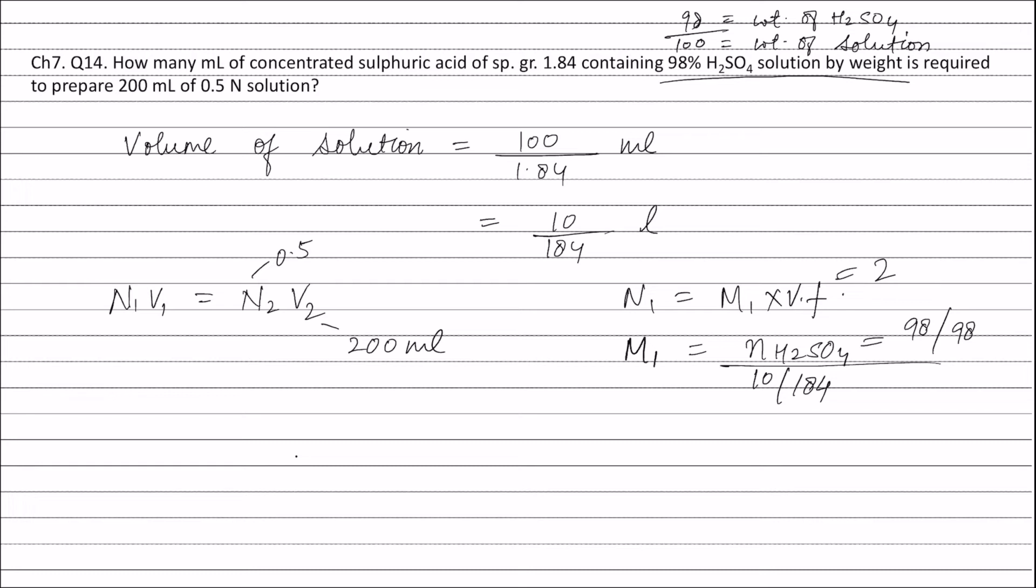Now, putting the value of normality N1 in this equation, we get 98 divided by 98 into 184 divided by 10 into 2 into volume V1, and this is equal to 0.5 into 200. Solving this equation, we get the value of V1 equals to 2.71 milliliters.